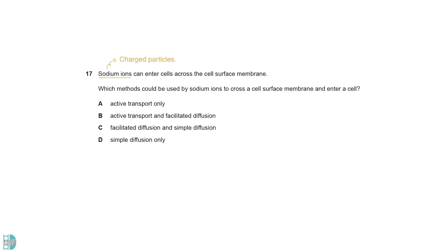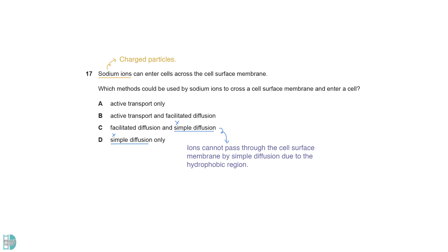Sodium ions are charged. Therefore, they cannot pass through the cell surface membrane by simple diffusion due to the presence of a hydrophobic region. They can move through the membrane via both active transport and facilitated diffusion, depending on the concentration gradient and the cell's need.